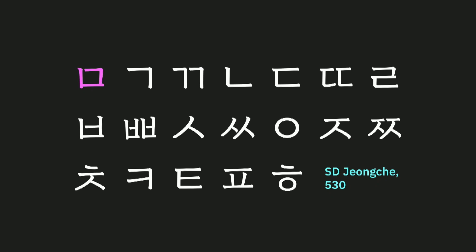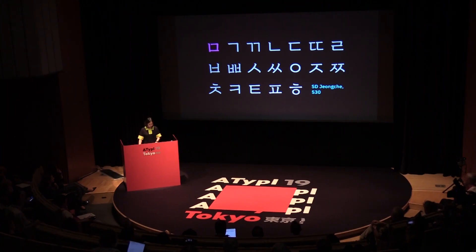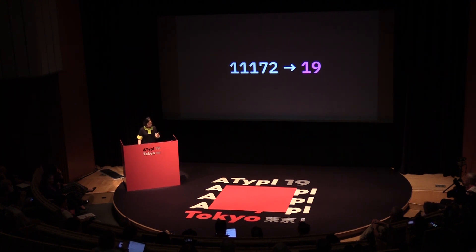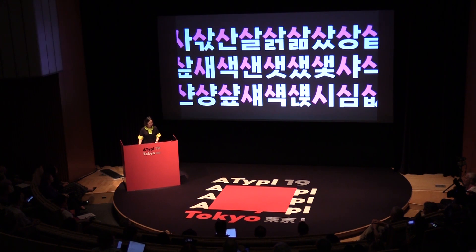Meaning that you must draw hundreds of shapes one by one — but using smart components, you technically need only one shape. Hangul has 19 shapes like this, and each shape appears 588 times. So if you do the math, originally you have to draw 11,172 glyphs all together. But now you only need to make 19 shapes — quite a big saving. Practically, I make a couple of components for each shape, so it is not actually 19, but theoretically you can reduce the number from thousands to 19.